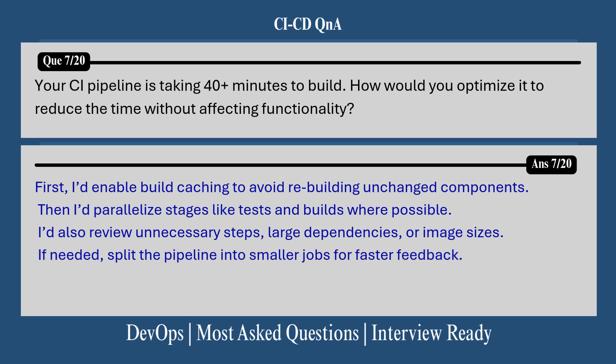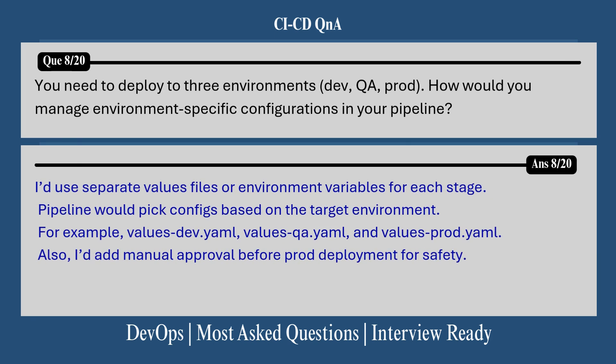Question 7: Your CI pipeline is taking 40+ minutes to build — how would you optimize it to reduce the time without affecting functionality? First, I would enable build caching to avoid rebuilding unchanged components. Then I would parallelize stages like tests and builds where possible. I would also review unnecessary steps, large dependencies, or image sizes. If needed, I would split the pipeline into smaller jobs for faster feedback.